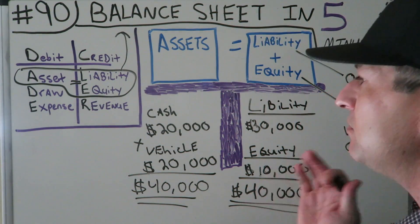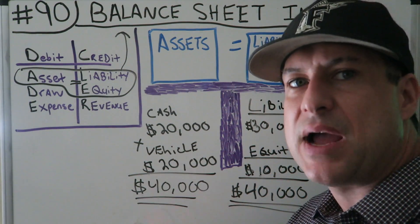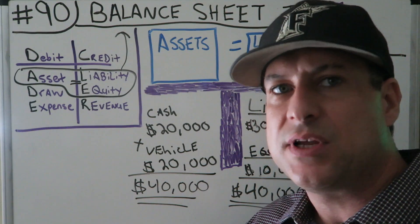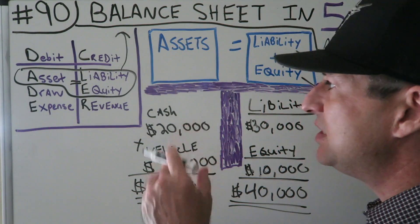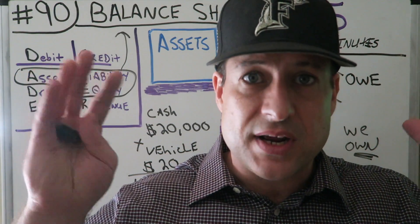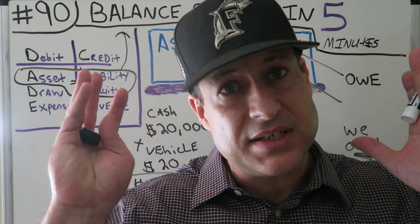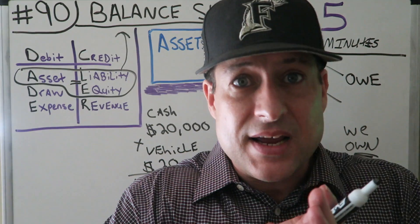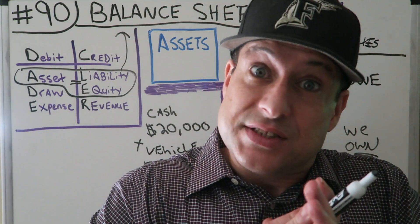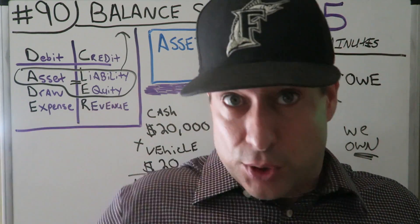Anyways, that's the five-minute balance sheet. Remember, they always have to balance: assets equal liabilities plus equity. We get that off DCA lure. This is CPA Strength. I love doing this. I'll see you tomorrow. Deuces.